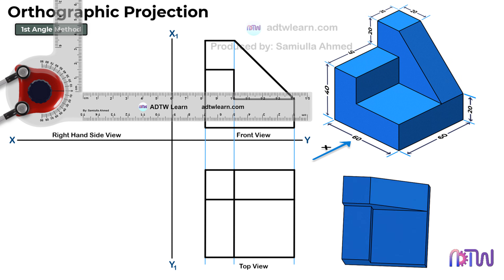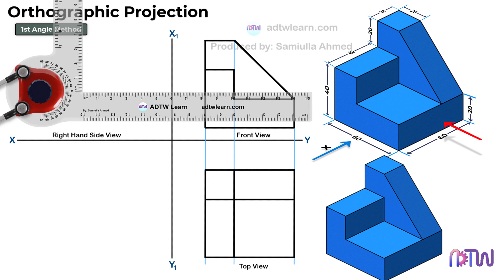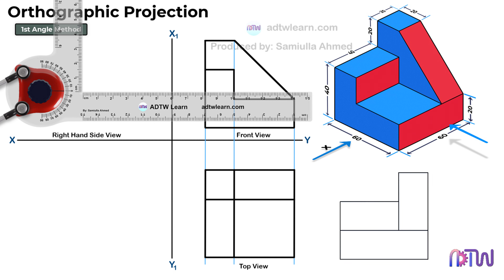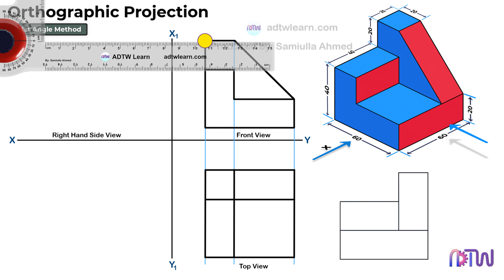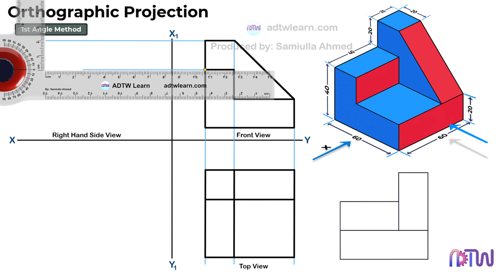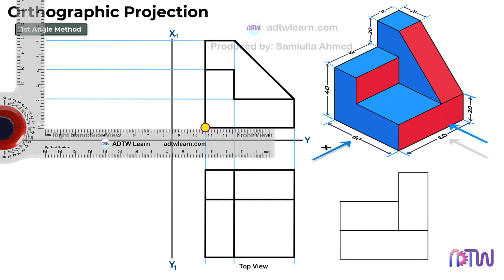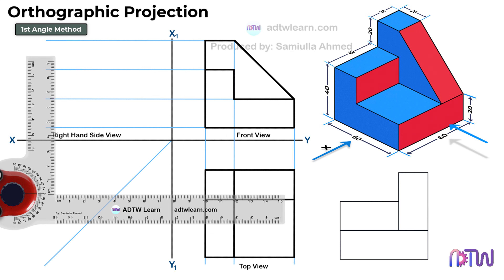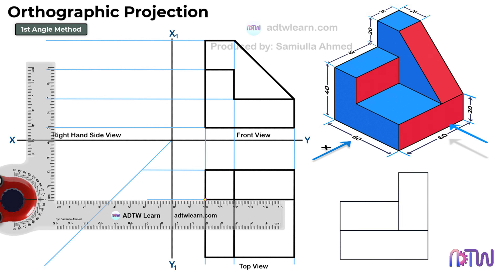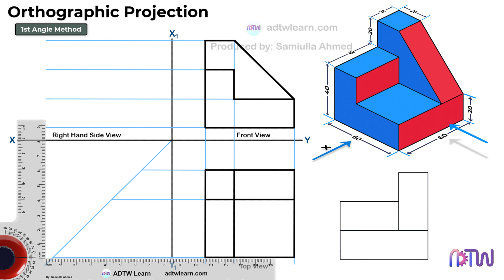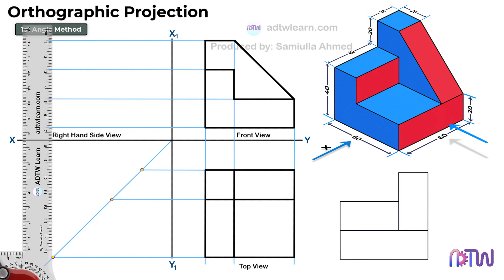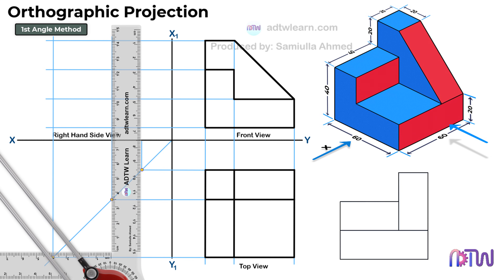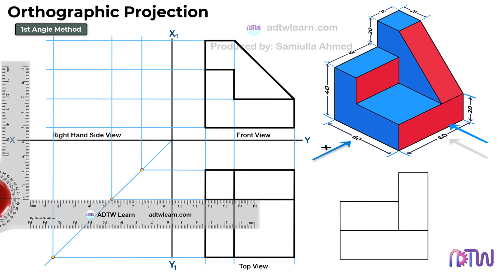In the end, we will draw the side view of the object. When we see the object from the right-hand side, this is how it will look. Before drawing, draw the reference lines from the front and top view of the object. To draw the reference lines from the top view, draw an inclined line of 45 degrees. After this, draw horizontal lines from the top view up to this inclined line, then draw vertical lines from each of these points. These reference lines will help in drawing the right-hand side view of the object.